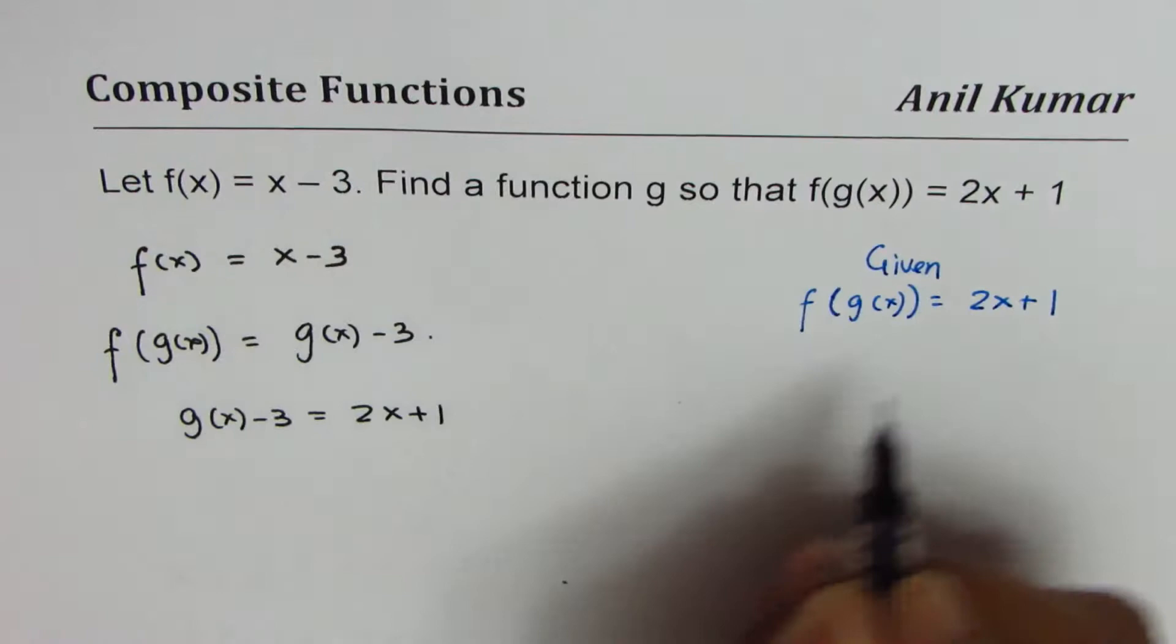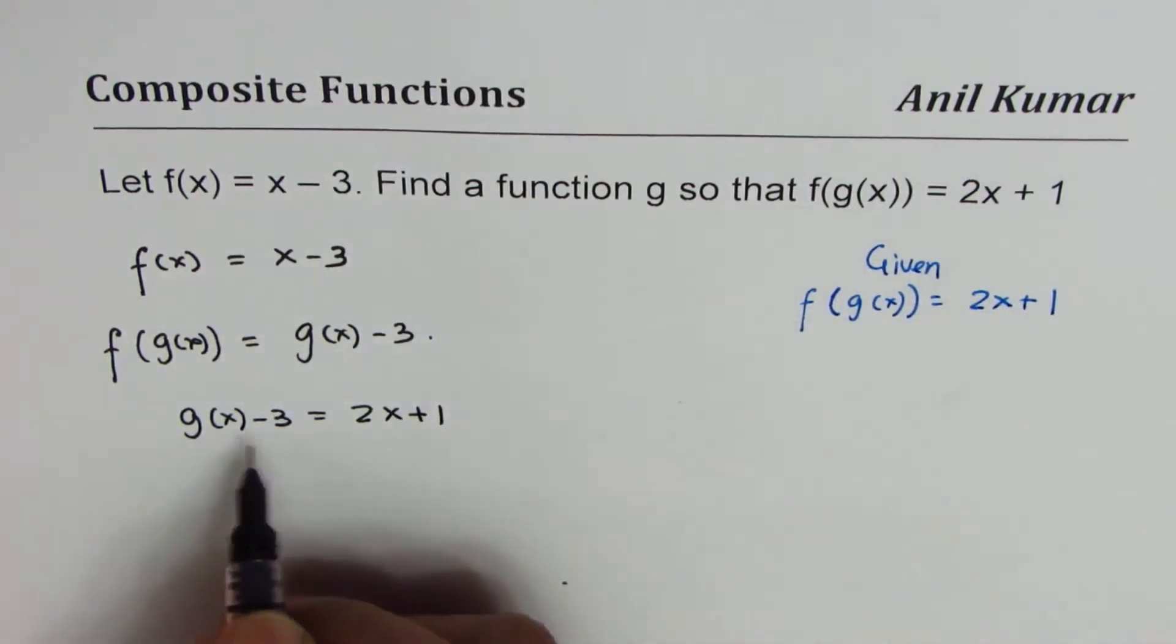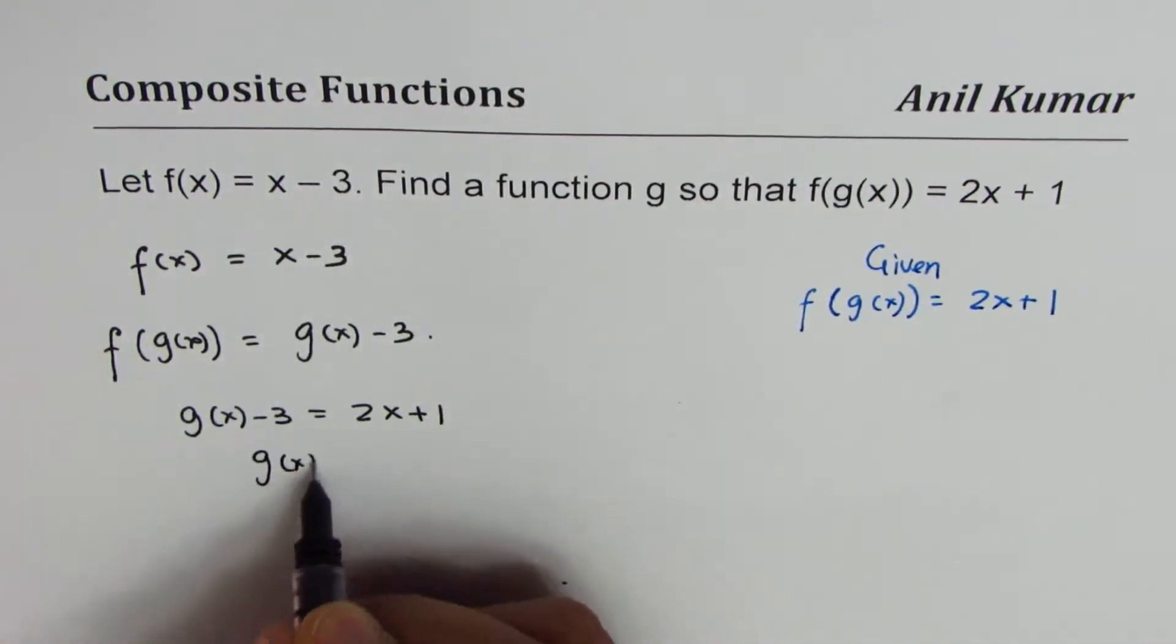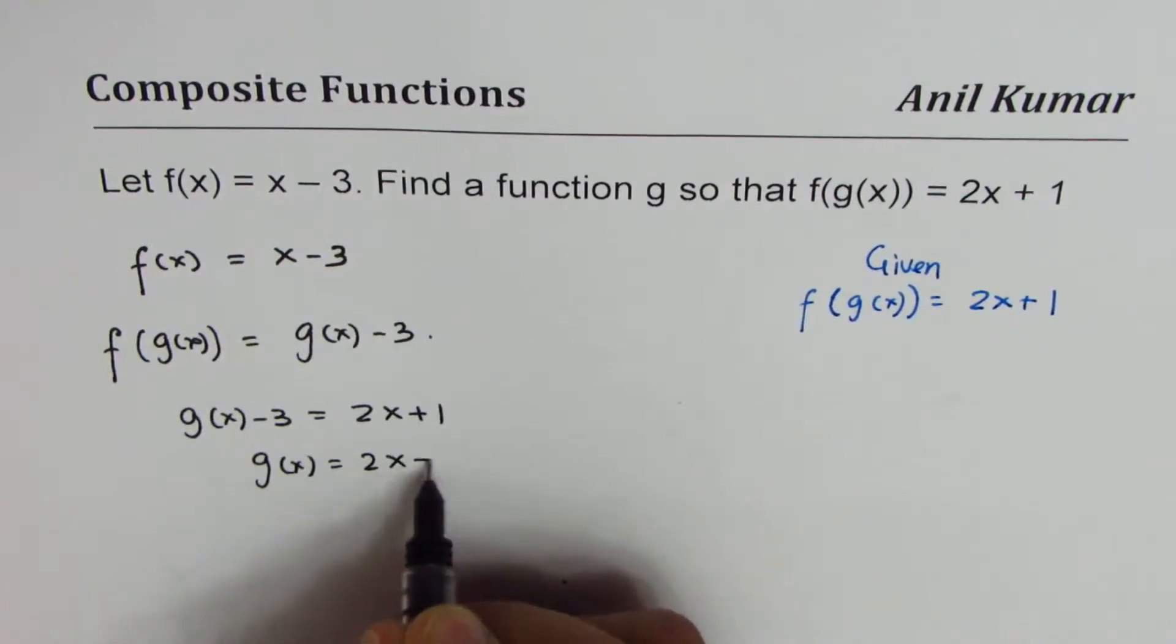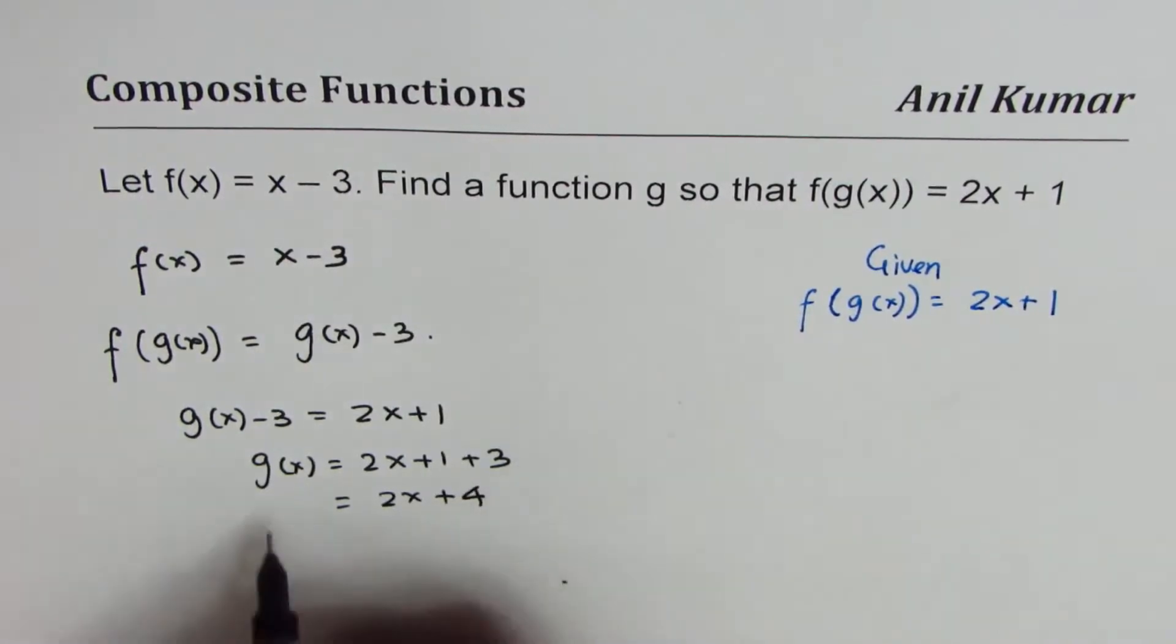Since we are given that, solving we get g(x) = 2x + 1 + 3, which is 2x + 4. So g(x) should be equal to 2x + 4. That is our answer: g(x) = 2x + 4.